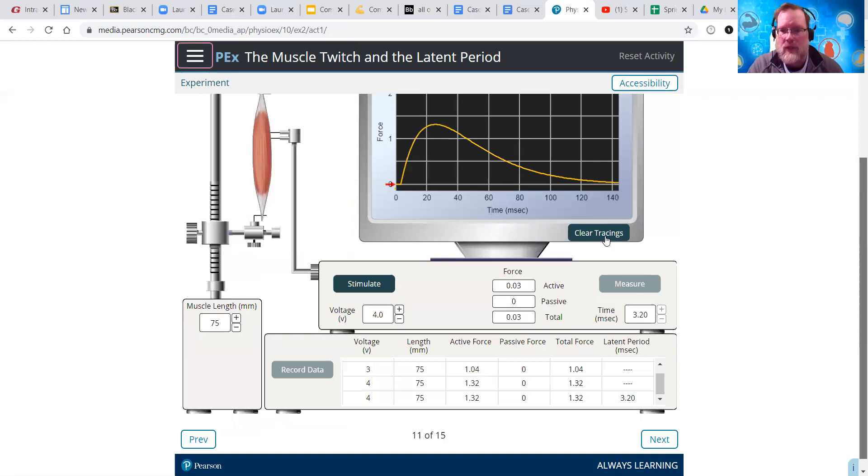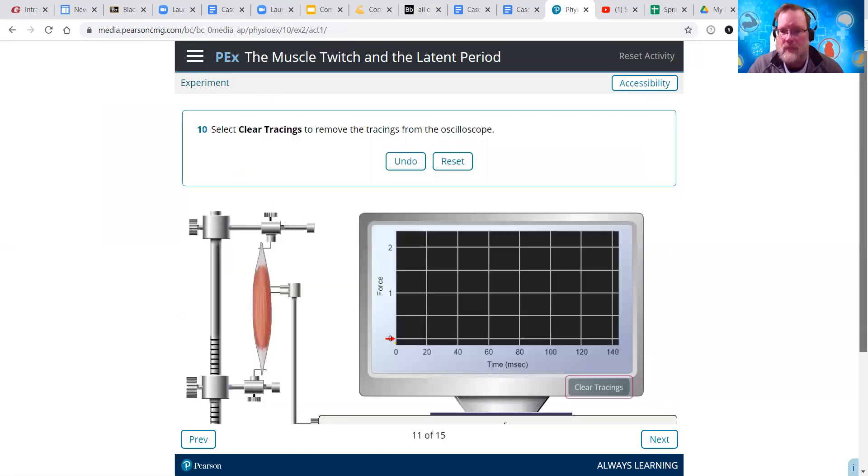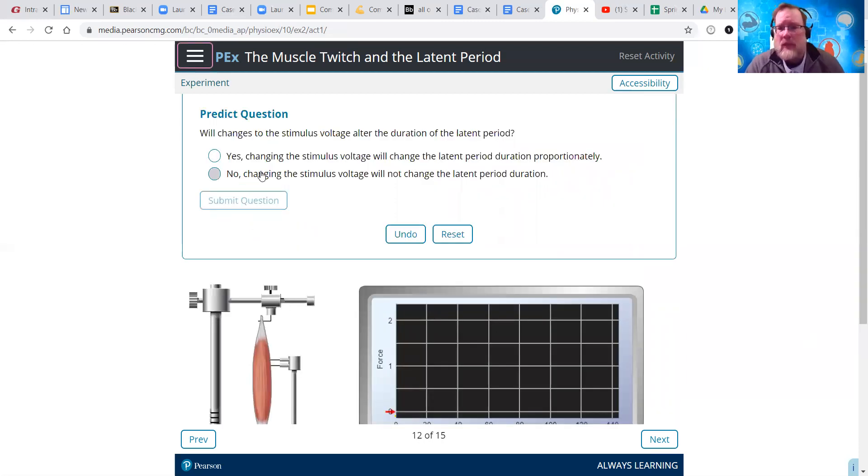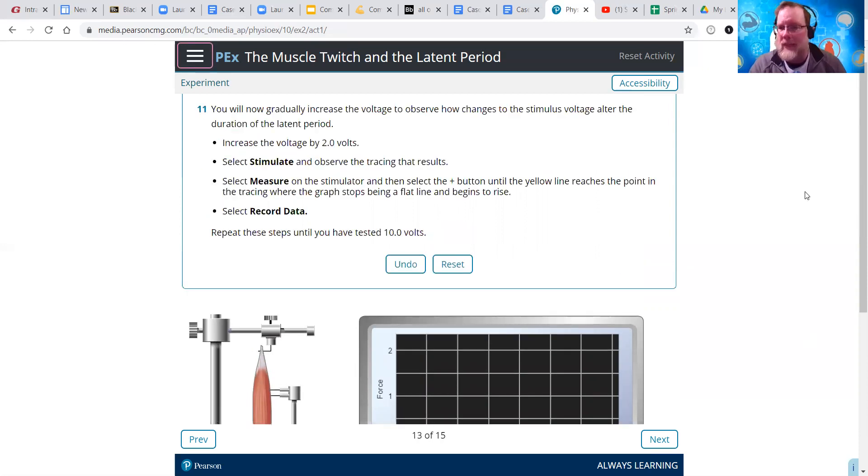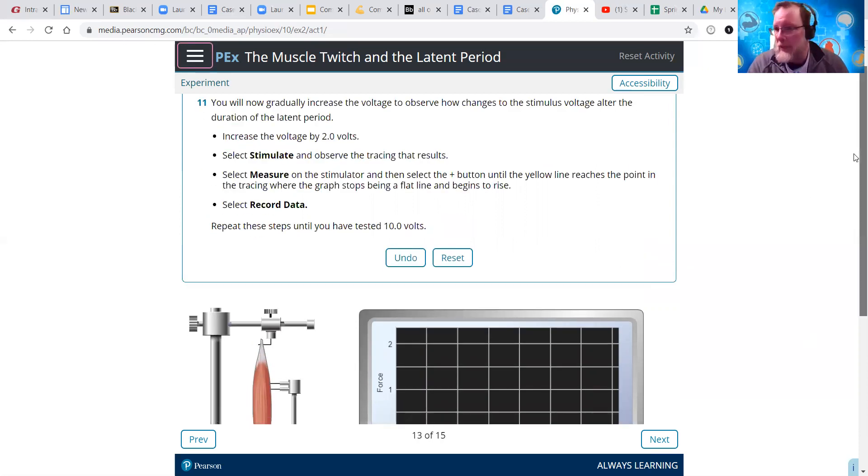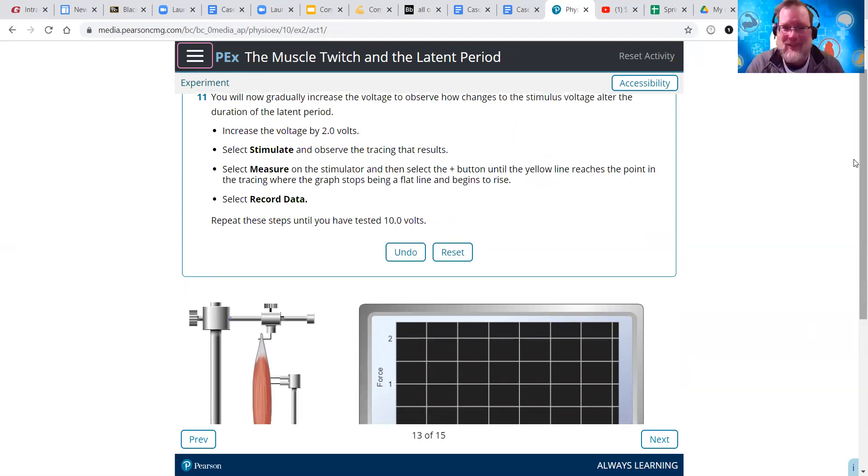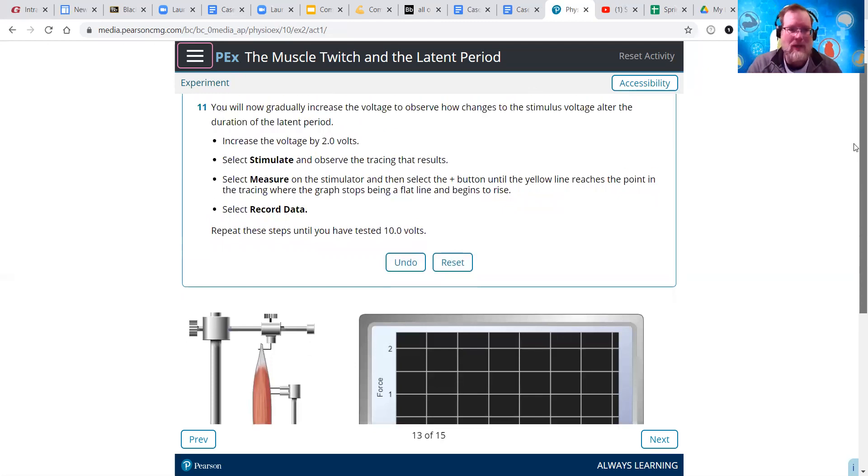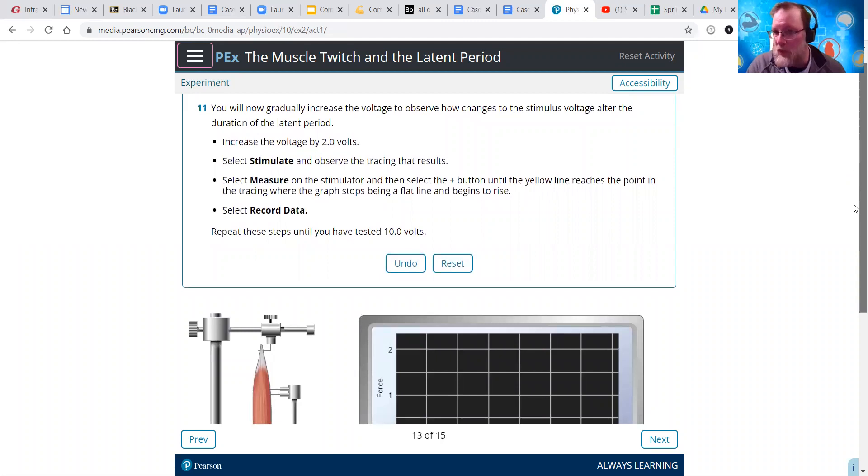Now, we're going to clear tracings. And then click next, and then it asks us a couple of things. Do we think the latent period is going to increase or decrease or stay the same based on changing the voltage? I don't know. You can pick whatever you want. I'm just going to click yes. I could pick no, but I don't want to give anything away. So, this is just what do you think. I think I end up clicking no. But anyway, click yes or no. That's why you're running the experiment to see if your observation or your hypothesis is correct.